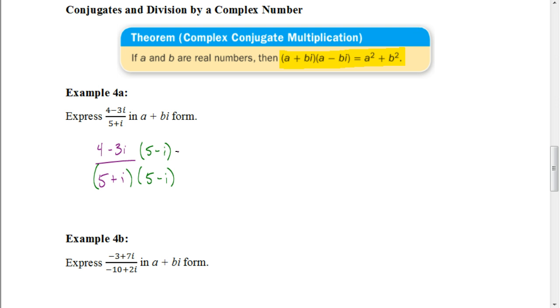And the reason why we can get away with doing that is you can do anything to a fraction as long as you do the same thing to both the numerator and the denominator. Because essentially, this is the same as multiplying it by 1, since 5 minus I over 5 minus I would just be 1.